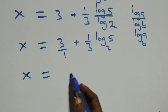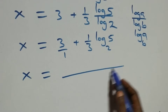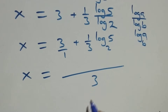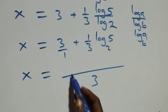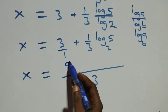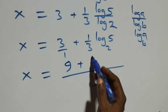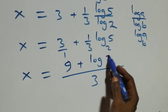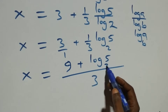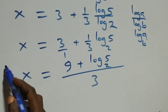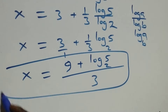Combining as a single fraction, x equals 3 over 1 plus log 5 base 2 over 3, which gives x equals 9 plus log 5 base 2, all over 3.